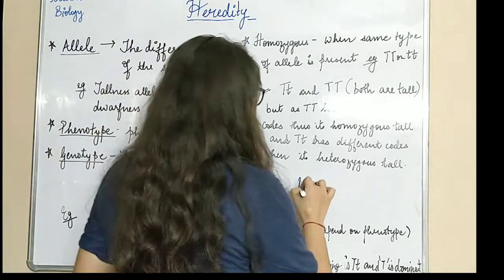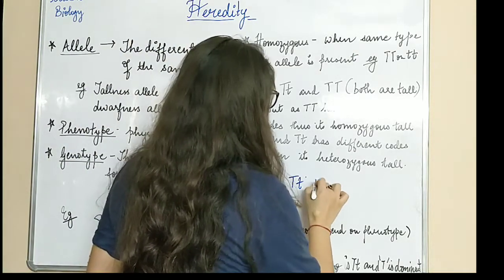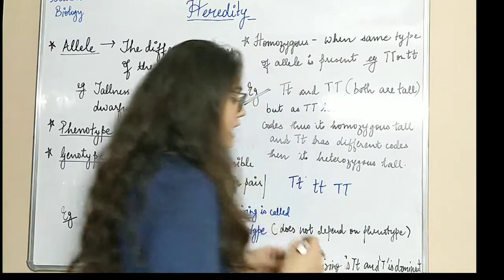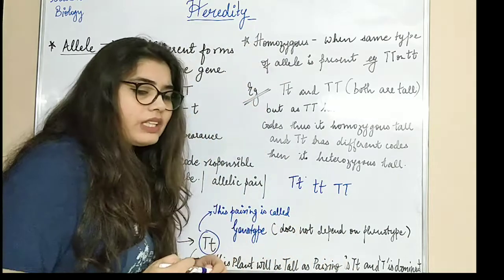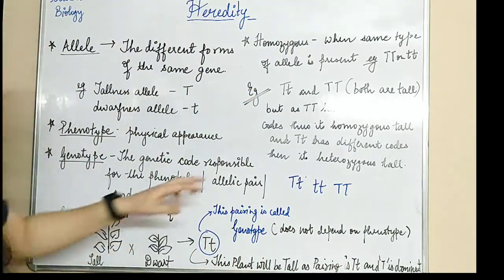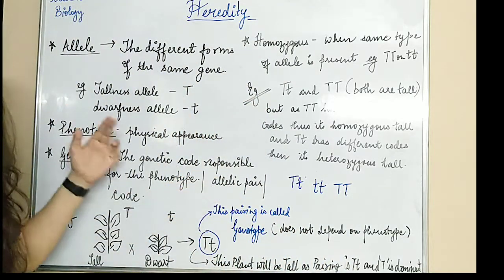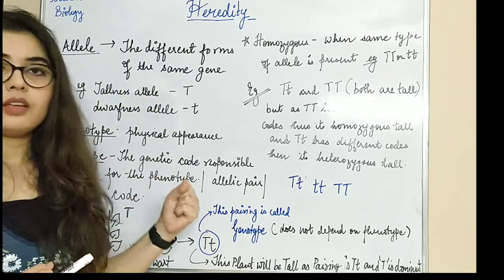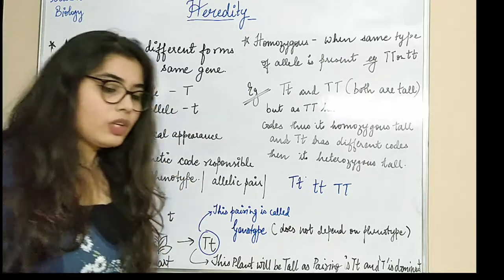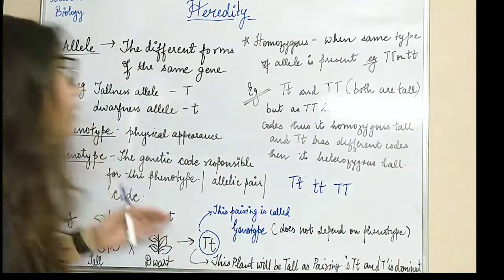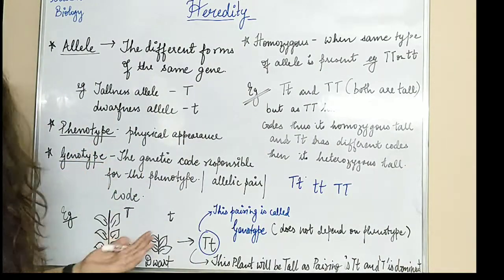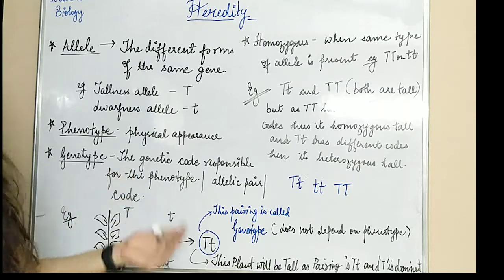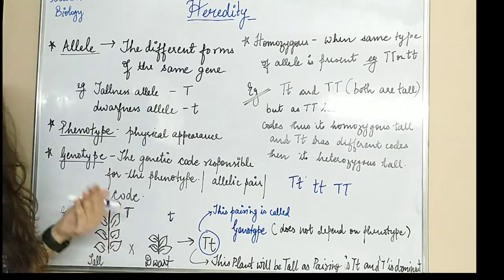If small t, small t is the genotype, it is responsible for dwarfness. If suppose small t, small t is present, we say that is one allelic pair — one code — and this code gives rise to a dwarf plant. This is a genotype; this is responsible for the dwarfness. And the genotype determines the phenotype — on the basis of the genetic code we can tell what the physical appearance will be.